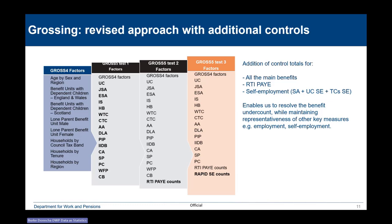That led us to a significant grossing review. This table here outlines Gross 4, which is the current variable name for the grossing factor on the FRS, and we created a number of test Gross 5 grossing factors. You've got a standard set of long-standing grossing factors on the FRS controlling for age, sex, region — mainly using census information. What we've done is, for the main benefits, we have added the administrative counts — the average across the survey year — as controlled totals.